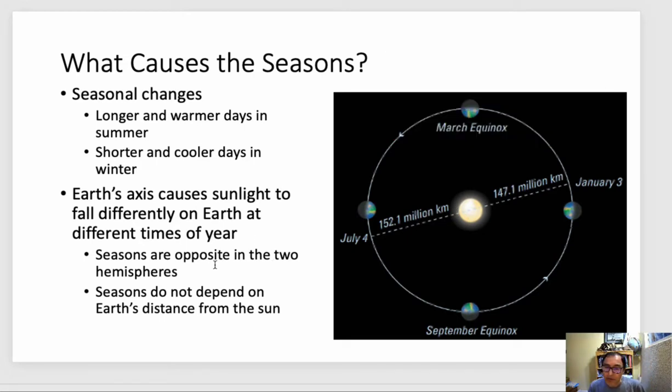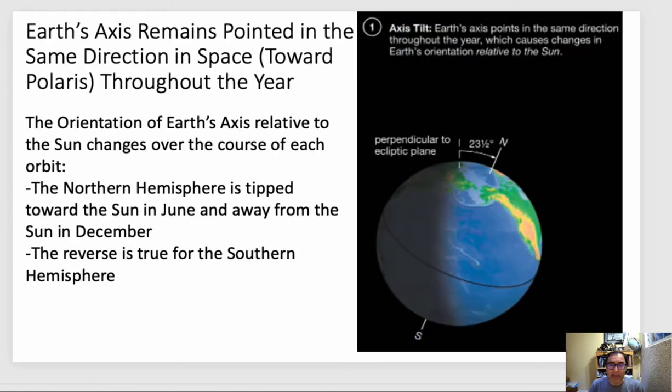And then obviously when we start talking about the solstices, there's going to be the June solstice and winter solstice because even though it's June for us and we like to call it the summer solstice, it's not summer in Australia. It's winter there. So the June solstice for the southern hemisphere means shorter days, colder days. So astronomers like to use the word June solstice and December solstice rather than winter and summer. So again, that axis remains pointed to the same direction in space throughout the year, towards Polaris.